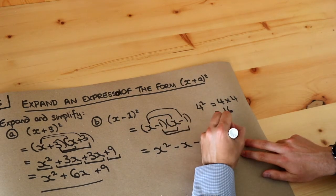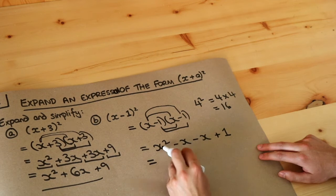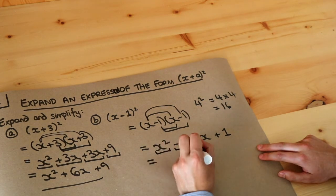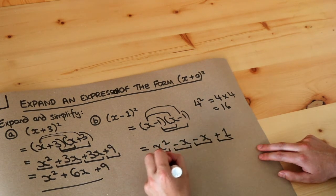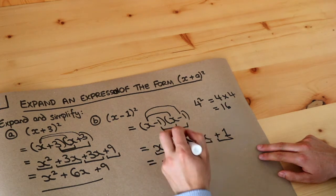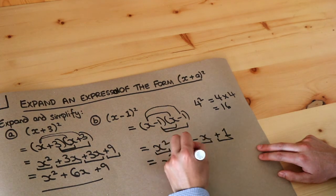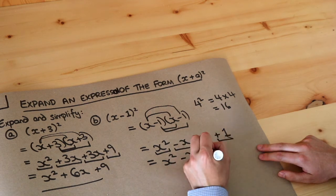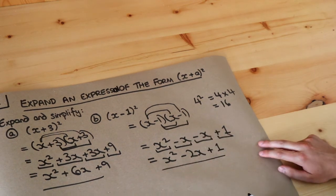Then we collect like terms. The x squared term is on its own. We've got minus x minus another x, which is minus 2x. And we've got the constant term plus 1. So the final answer is x² − 2x + 1.